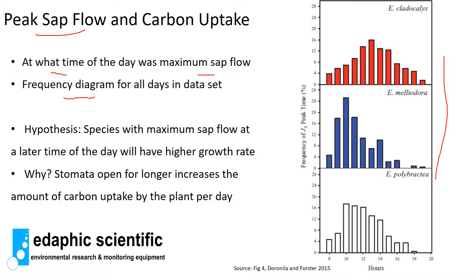This example comes from a publication by Doralena and myself. We had three different eucalyptus species: Eucalyptus cladocalyx, Eucalyptus meliodora, and Eucalyptus polybractea. Eucalyptus cladocalyx had a peak sap flow at about 1 pm, whereas Eucalyptus meliodora and Eucalyptus polybractea had a peak sap flow at about 10 to 11 o'clock in the morning.